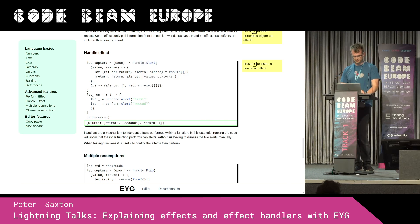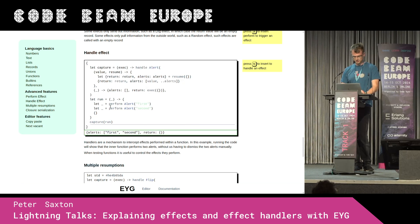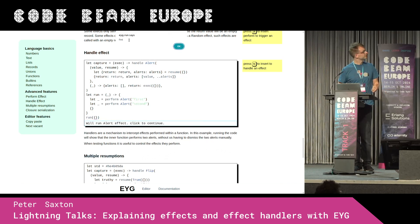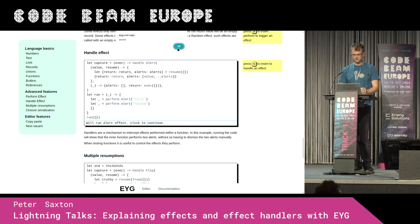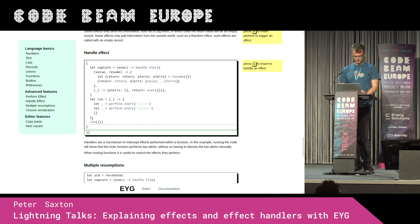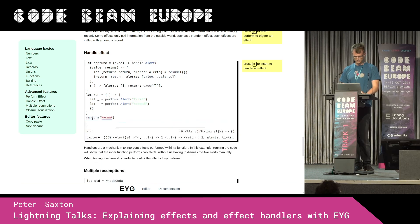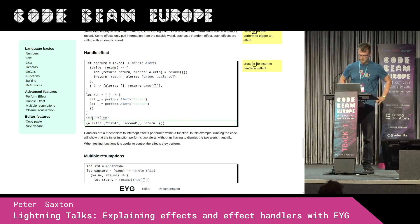So here we have a program — the key thing at the bottom is this `run` function. Let's do it without any capture, so let's take run — it's going to do the alert effect: got the message first, got the message second. Then we had variable capture — call it with run.